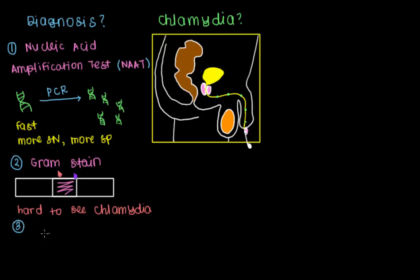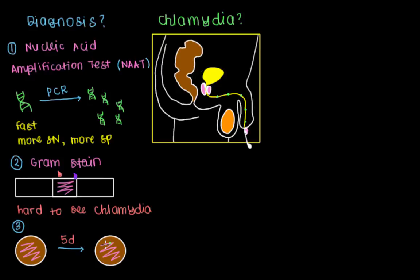Another test is to take the sample from our swab and put it on a petri dish. We let it sit and grow for about five days. After five days, we would see the petri dish start to grow some colonies of chlamydia. That's how we could figure out that this bug is growing in our patient. But as you noticed, this test takes too long to get a conclusive diagnosis, which is why we've elected to use faster techniques nowadays.